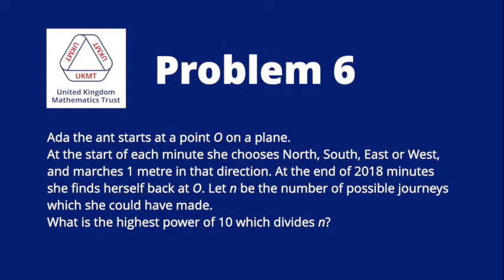Problem 6. Ada the ant starts at a point O on a plane. At the start of each minute she chooses north, south, east or west and marches one metre in that direction. At the end of 2018 minutes she finds herself back at O. Let N be the number of possible journeys which she could have made. What is the highest power of 10 which divides N?